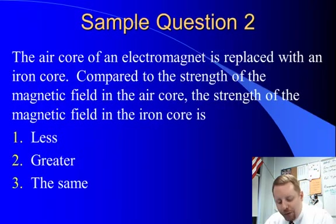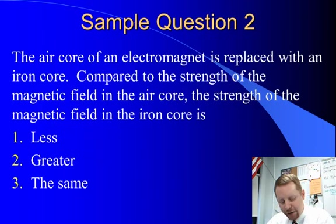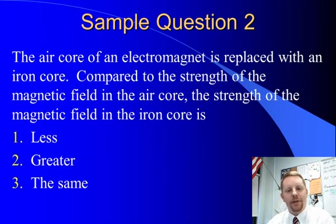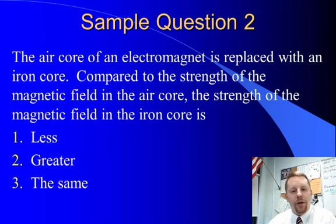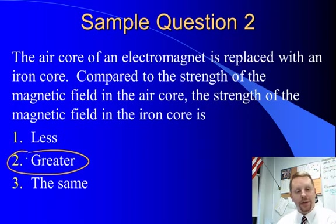Sample question: The air core of an electromagnet is replaced with an iron core. Compared to the strength of the magnetic field in the air core, the strength of the magnetic field in the iron core is less, greater, or the same? When you put the iron core in the solenoid, you get a stronger magnetic field, so the answer is greater — choice 2.